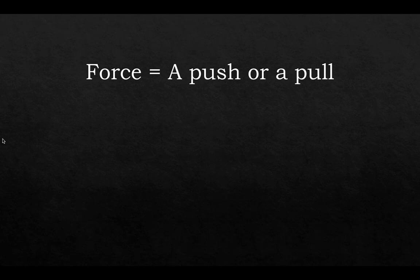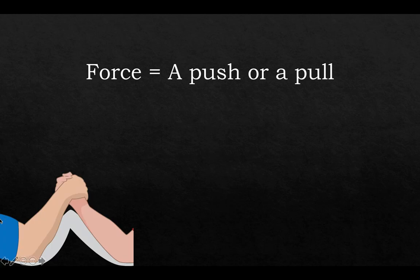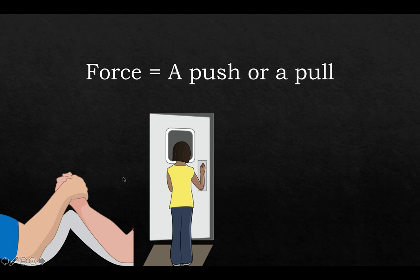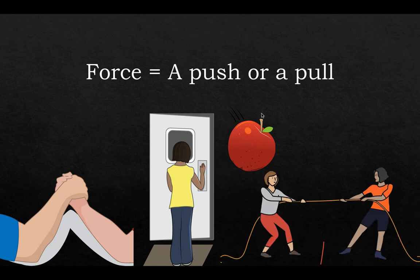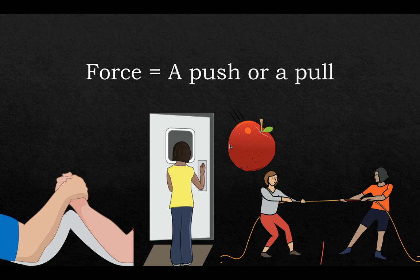Or you can have a push or a pull by friction or gravity — those are forces you don't necessarily see in the same way. My first example is two people arm wrestling: the two arms are exerting forces on one another. A young lady pushing on a door is a force. Gravity is pulling an apple to the earth. Two young ladies playing tug of war are both pulling on the rope. All four of these are examples of forces.